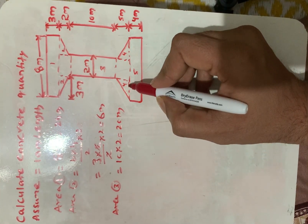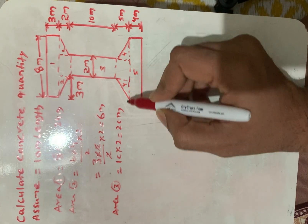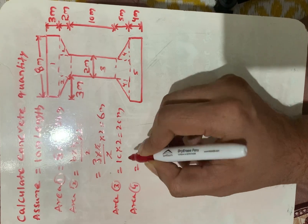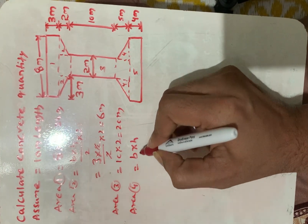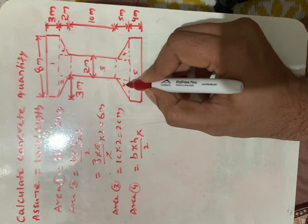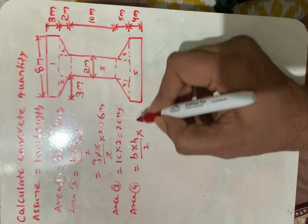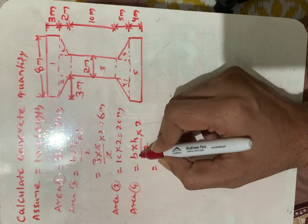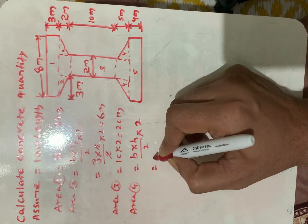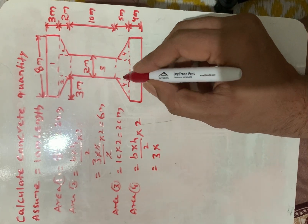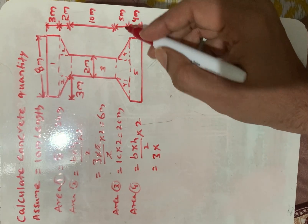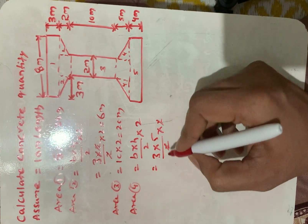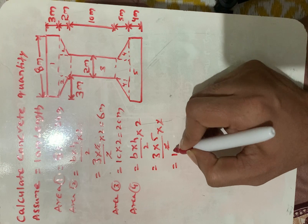Section 4 is again a triangle — actually two triangular sections. Using the formula B × H / 2 × 2 (because there are two sections), the base B is 3 meters and the height from this point to this point is 5 meters. So 3 × 5 / 2 × 2 — the 2s cancel — giving 15 square meters.